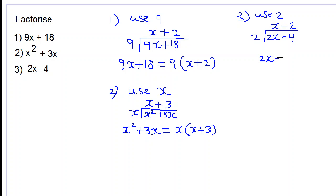Therefore, 2x subtract 4 equals 2 multiplied by x subtract 2. So this is our answer.